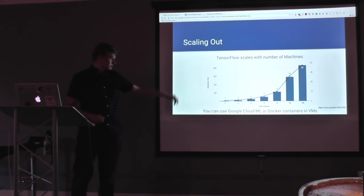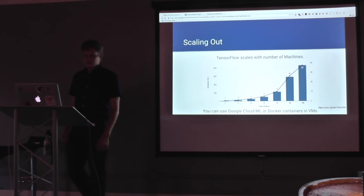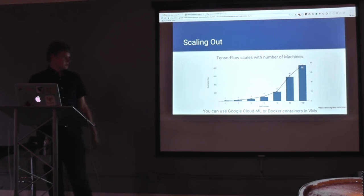So we have a simple graph showing how to scale from one machine to 16 machines to 100 machines. Up to 50x, 60x speedup. You can use it on Cloud Machine Learning or on many VMs with Docker. Pretty straightforward.